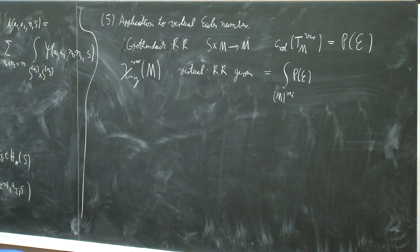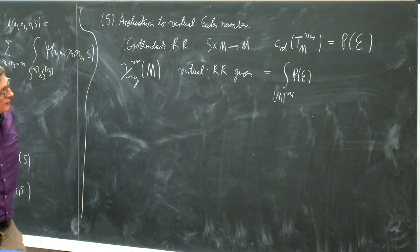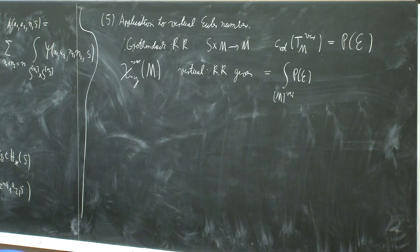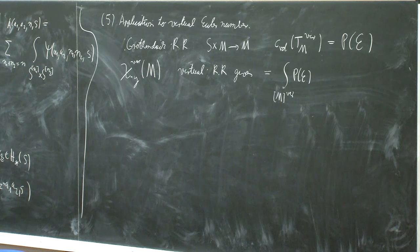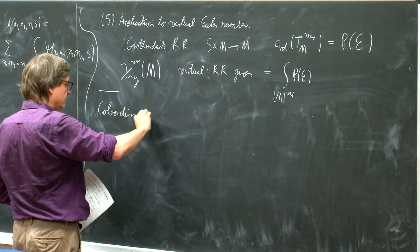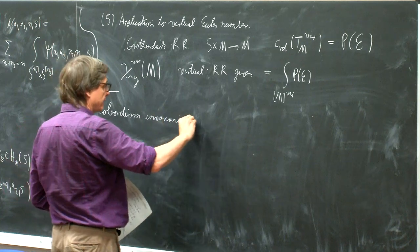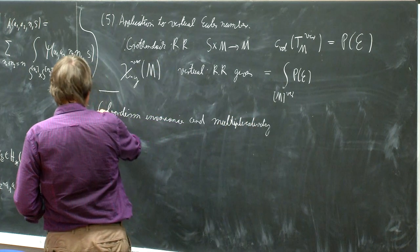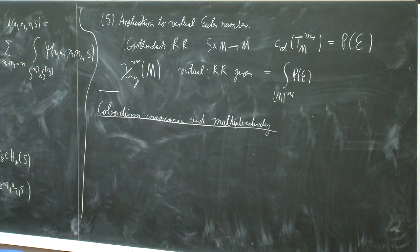In both cases one can explicitly compute what these things are and express them in terms of tau classes, which means we can apply Mochizuki's formula to both situations, and also to many more general ones. The expression is very complicated and we cannot directly understand it, so we establish two properties to make it more palatable: cobordism invariance and multiplicativity. These will allow us to reduce the computation to the case of toric surfaces and apply localization.